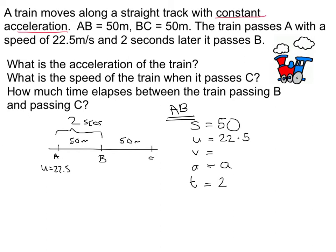Now, what did I do wrong here? You're probably thinking nothing. What I did wrong was I didn't start by specifying my positive direction. And this is really, really important in a SUVAT. So when we start, we make a note of what we're considering to be positive. In this case it's fairly obvious, but it gets more complicated.